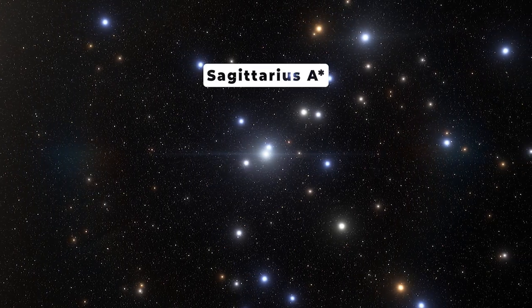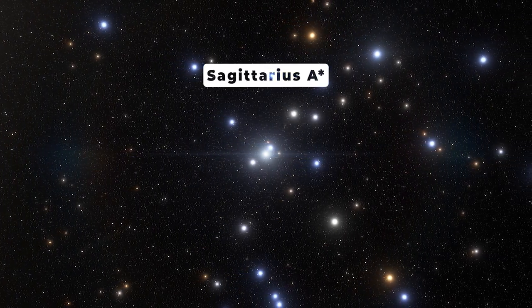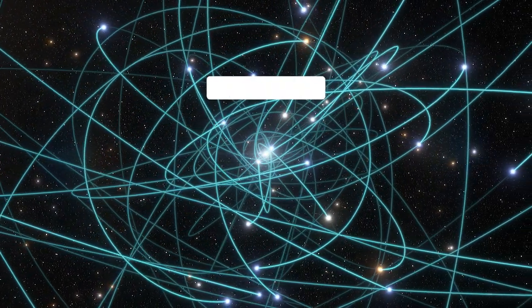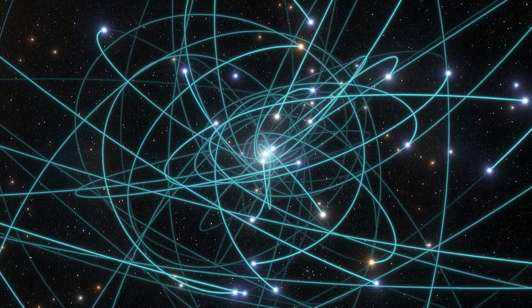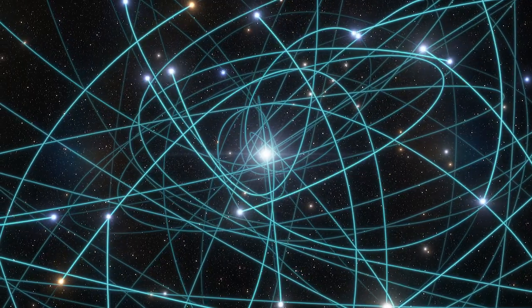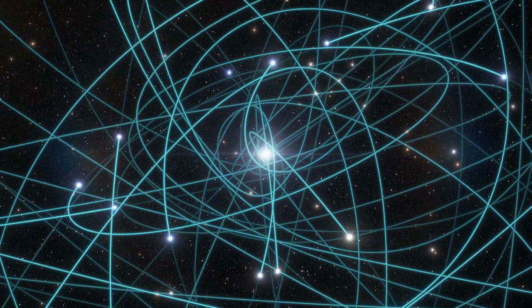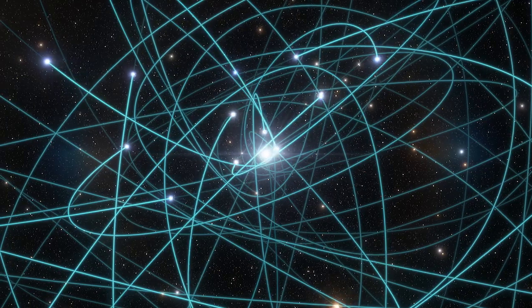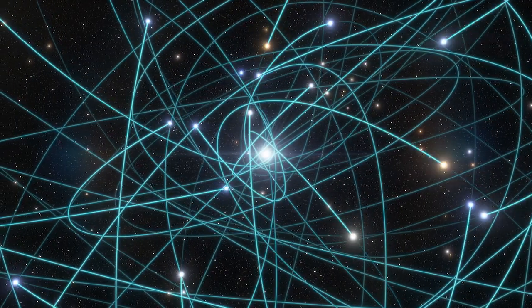This black hole called Sagittarius A isn't alone. A variety of objects, including dozens of massive stars, exist there. These orbit so close to the black hole that the enormous gravity swings them around at enormous velocities.